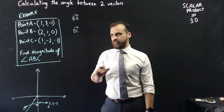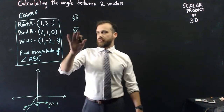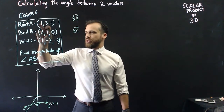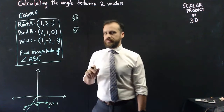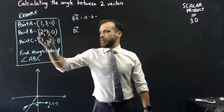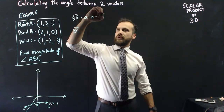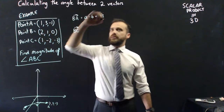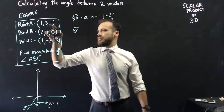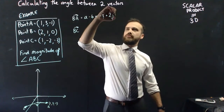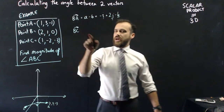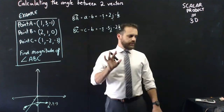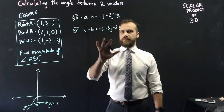To find the angle, I need to know what vectors BA and BC are. Vector BA is found by taking the coordinates of A minus the coordinates of B: (1-2, 3-1, -1-0) = (-1, 2, -1). Then I do the same for C minus B to get vector BC. Now I have two vectors BA and BC.